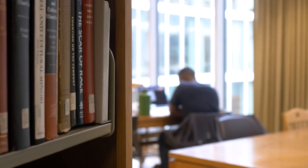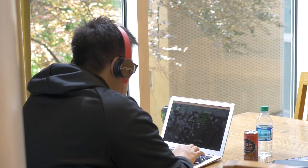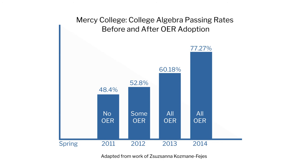We supported Mercy College in New York through their transition from commercial math materials to OER math. As they grew from a pilot to a department-wide adoption, their C or better rates for college algebra grew from 48% to 77%. That's a remarkable shift.